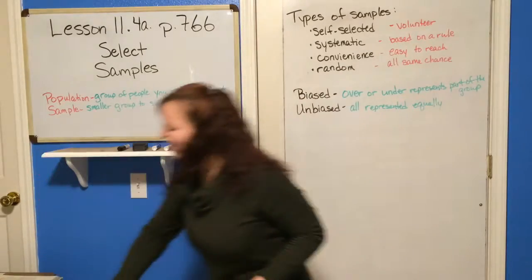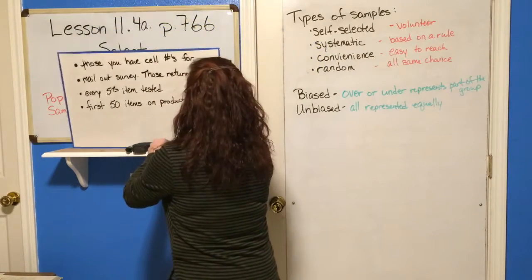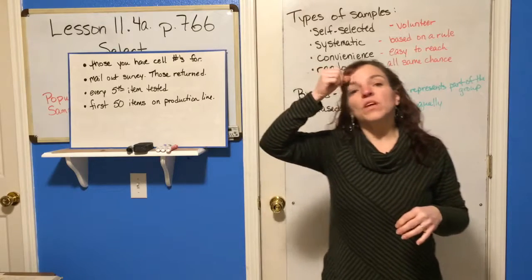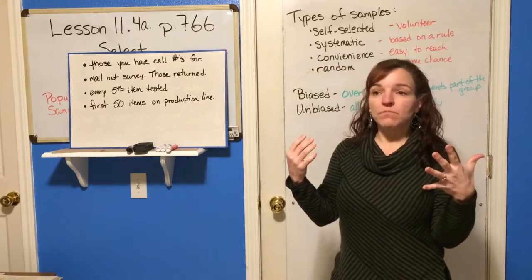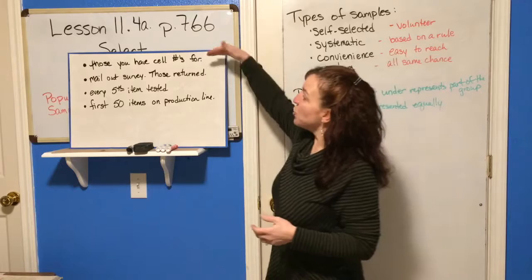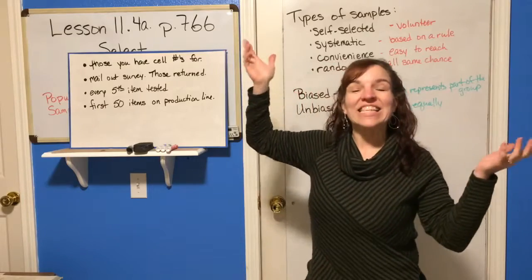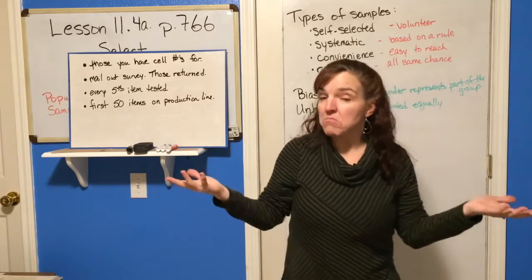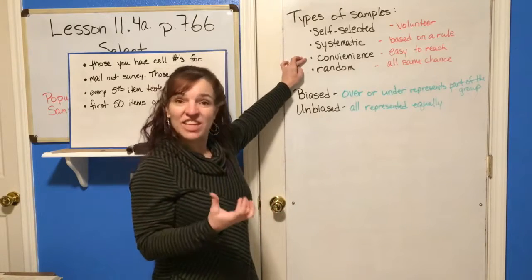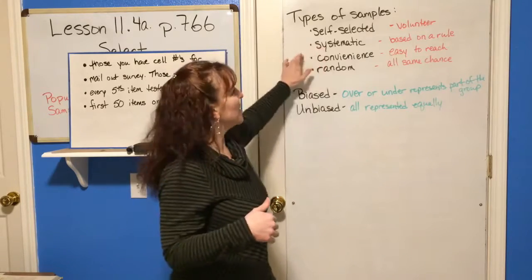I have some examples here. If a sportscaster wants to contact college baseball coaches about their opinion on what types of baseball bats should be used, and the sports writer chooses to contact the coaches that he has cell numbers for, what type of sample might that be? If he just chooses the ones he has cell phone numbers for, that would definitely be a convenience sample. They'd be the easiest to reach — he already has their information. So that's a convenience sample.